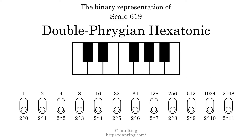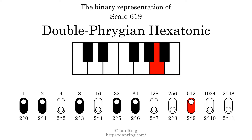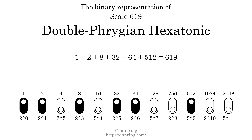The binary representation of this scale is determined by mapping tones of the scale to binary digits. Each binary digit represents a power of 2. To get the scale number, we add the powers of 2 together. The powers of 2 that are present in the scale, all added together, equals 619. That is why the scale number, in decimal, is 619.